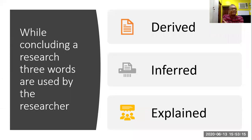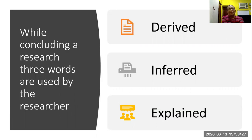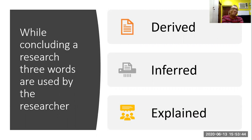While concluding a research, three words are used by the researcher: derived, inferred, and explained. The question is, are all three words the same or different? Or if the researcher has used all three words, what kind of methodology would they have followed? Let us think for 30 seconds: what do we mean by derive, infer, and explain?